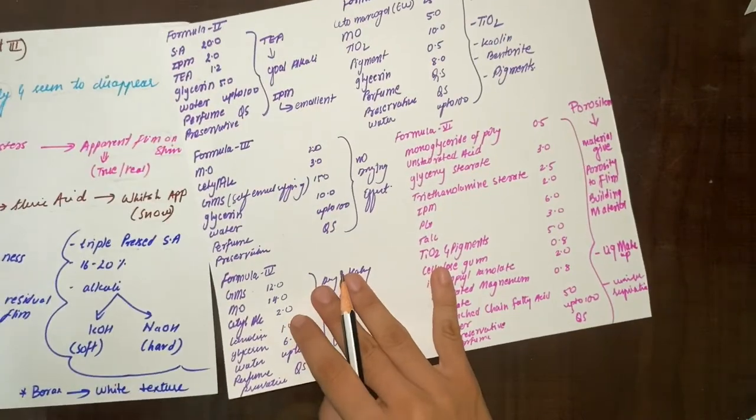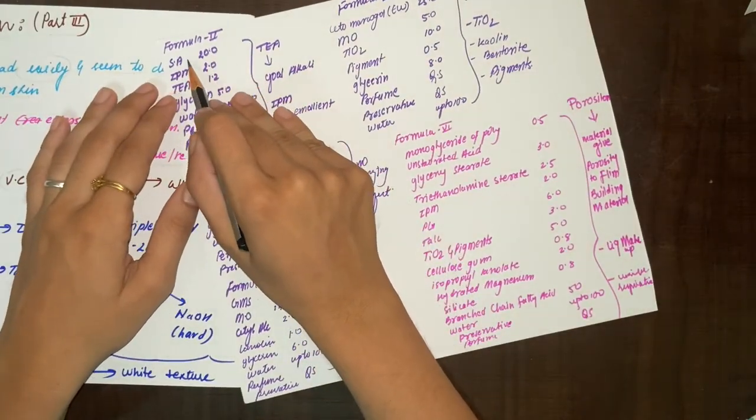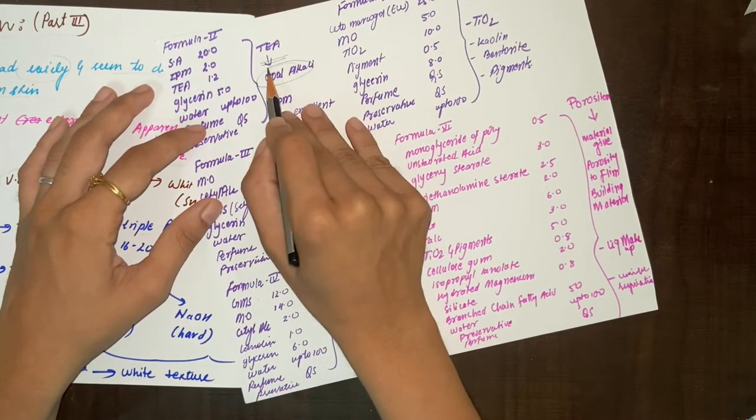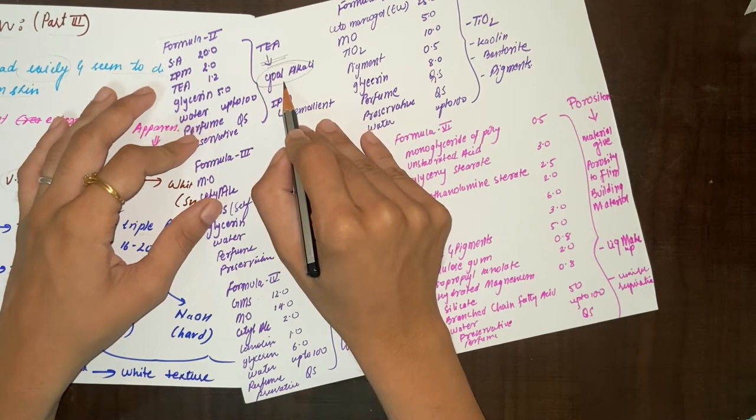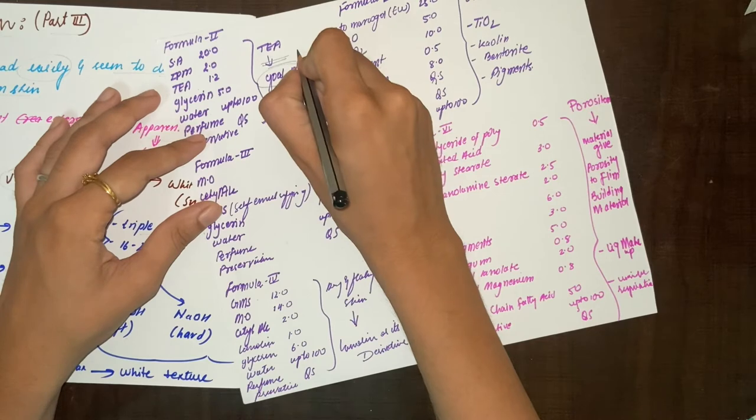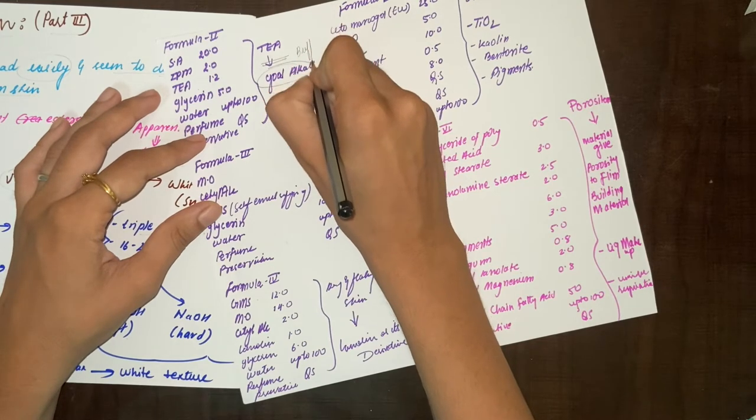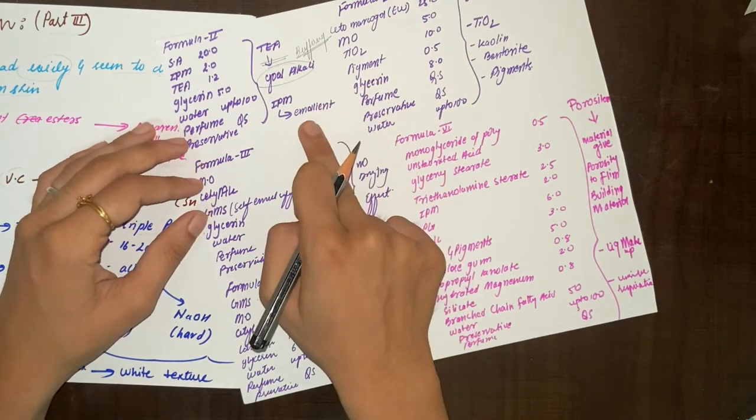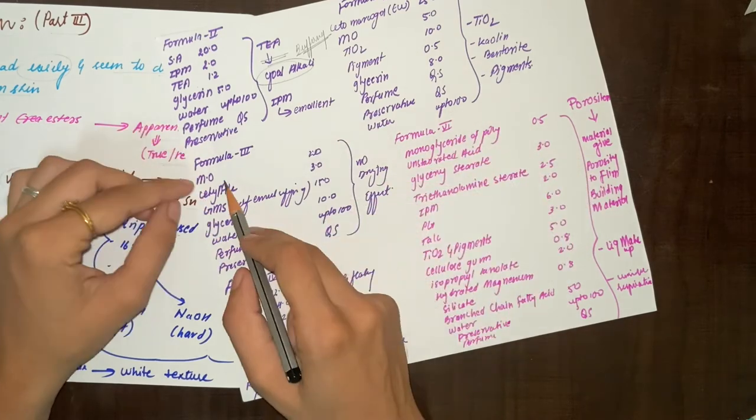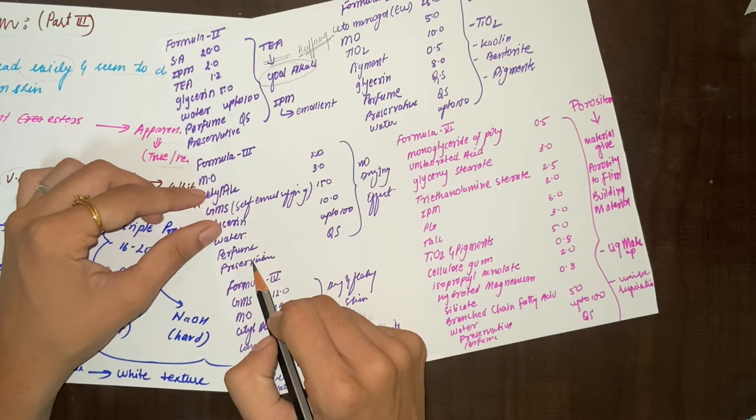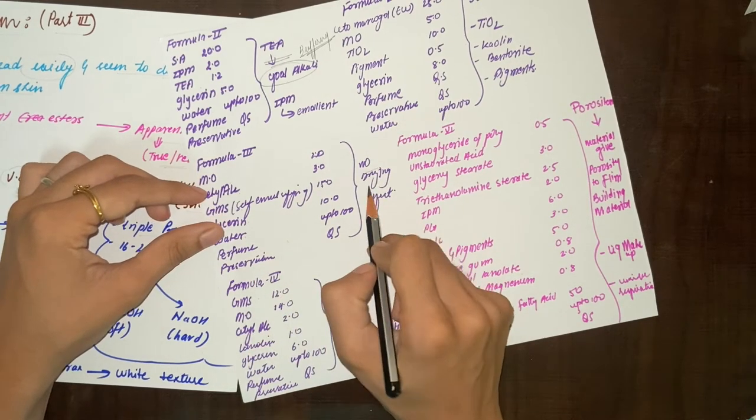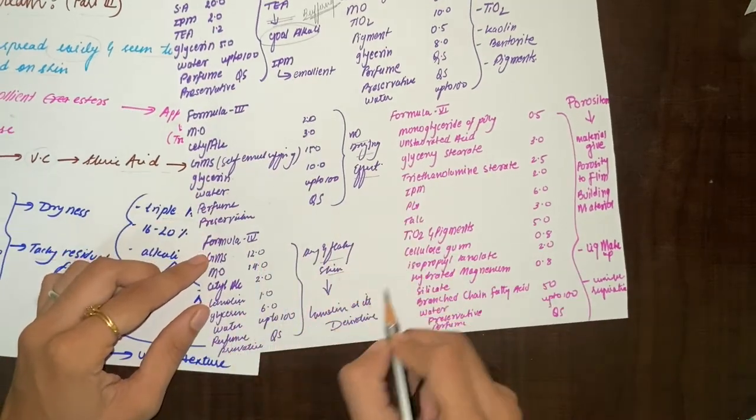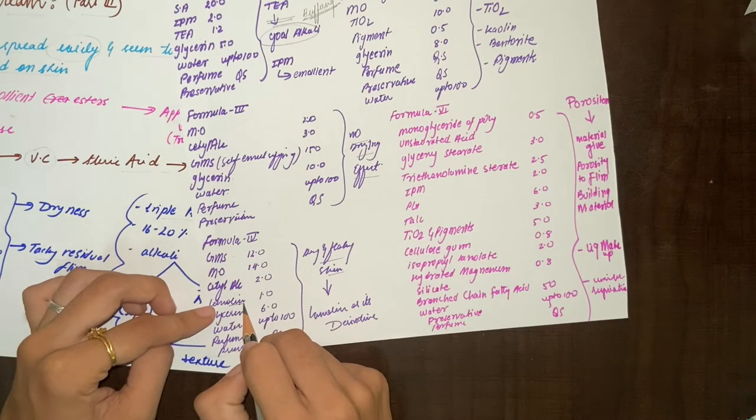This is similar to formulation second where we are using TEA, that is triethanolamine. What we will do in the formulation is buffering action - sometimes pH is more than normal pH and sometimes it will be less than normal pH. Here we use IPM which is emollient. According to our requirements we will modify the formula. In the next formulation we will get no drying effect. When the skin is dry or flaky, we will use lanolin and its derivatives.